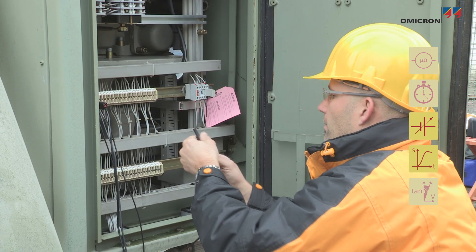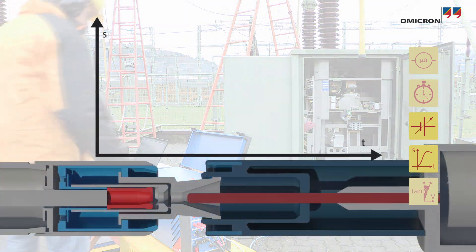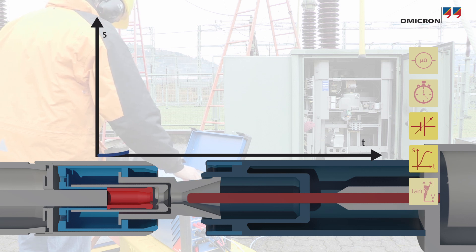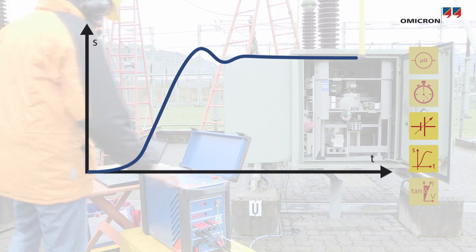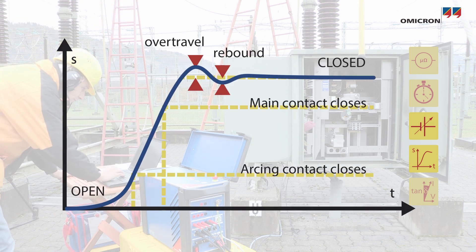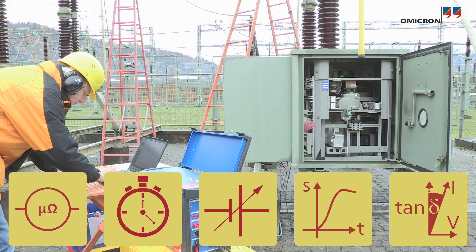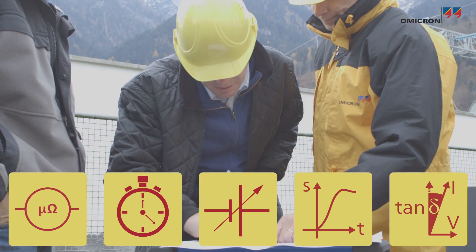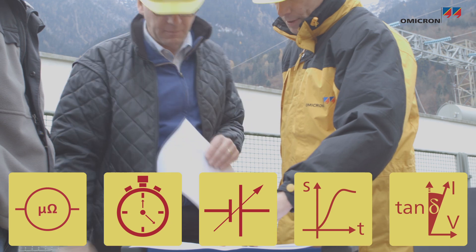Additionally, if the circuit breaker travel curve is recorded, it allows mechanical parameters to be assessed such as velocity, total travel, acceleration, over-travel, and rebound. By performing these measurements, the station operator can verify that the equipment is in good working condition or can initiate maintenance activities.